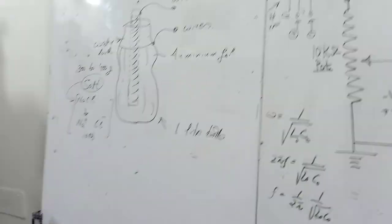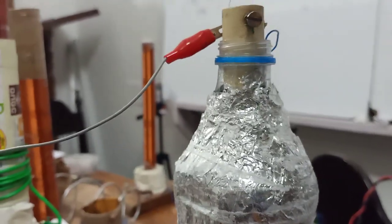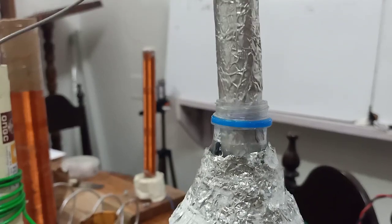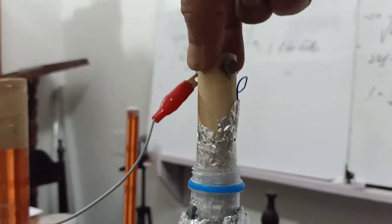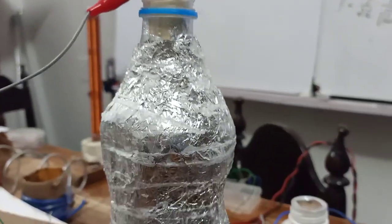It is connected to a wire. Then there is a pipe inside which again has aluminum foil to increase the surface area. The inner and outer aluminum foil should not touch each other.